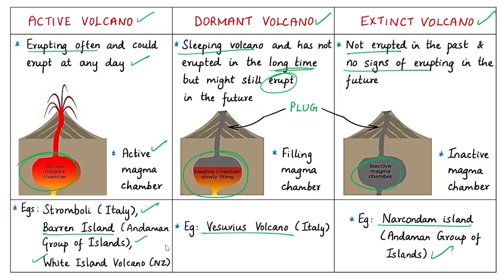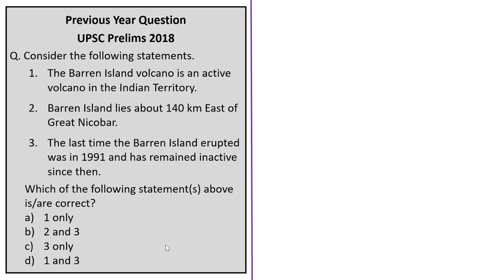An active volcano erupts often and could erupt at any time, characterized by an active magma chamber — making it the most dangerous type. Examples include Stromboli volcano in Italy and Barren Island in the Andaman Islands, India. White Island in New Zealand is also an active volcano. Despite being dangerous, it is a tourist destination; when it erupted on Monday, 47 people were on it, with nearly five deaths and two dozen feared missing and presumed dead.